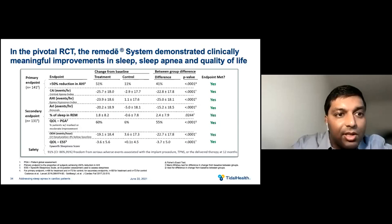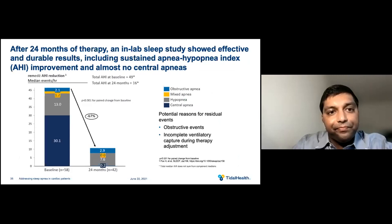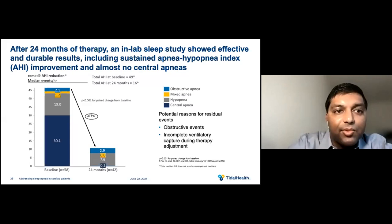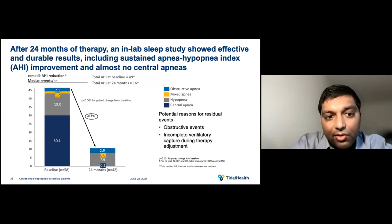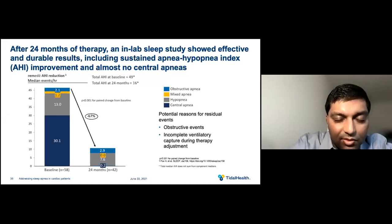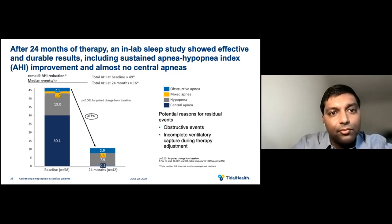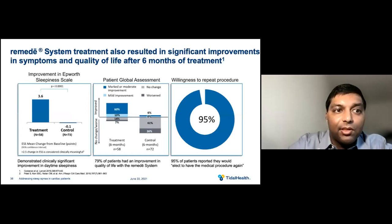In the pivotal randomized controlled trial, the Remedē system demonstrated clinically meaningful improvements in AHI reduction, central apnea index, arousals, percent of sleep in REM, quality of life, oxygen desaturation index, and Epworth Sleepiness Scale. Patients were also studied at 24 months after therapy with in-lab studies showing effective and durable results with sustained AHI improvement and almost no central apneas. The central apnea index went from around 30 — severe — down to 0.2 at two years with Remedē therapy. There are some residual obstructive events, but the central apneas are mostly treated.